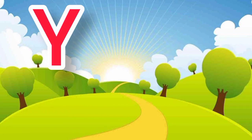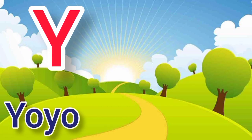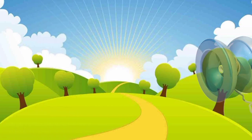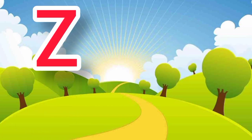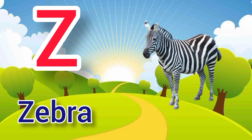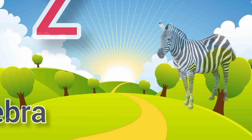Y. Y for yo-yo, yo-yo means yo-yo. Z. Z for zebra, zebra means chittidhar ghoda.